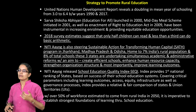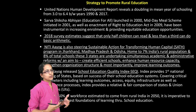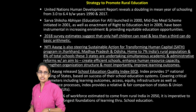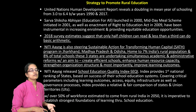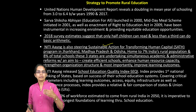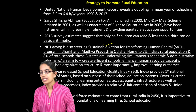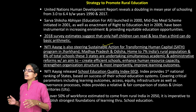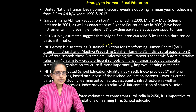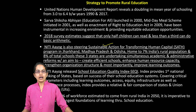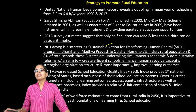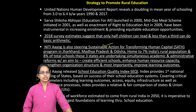Strategies to promote rural education began with Sarva Shiksha Abhiyan, now subsumed under Samagra Shiksha Abhiyan. Under Niti Aayog, there is a new initiative called SATH — Sustainable Action for Transforming Human Capital — which started in Jharkhand, Madhya Pradesh, and Odisha. These three states are home to 7% of the population and 8% of total schools in India. The aim is to create better schools, enhance human and resource capacity, and improve learning outcomes. Niti Aayog also released SEQI, the School Education Quality Index, which ranks states based on learning outcomes, equity, access, infrastructure, and governance.